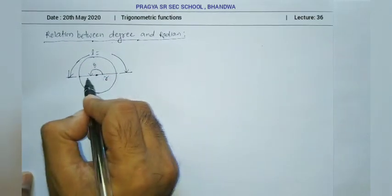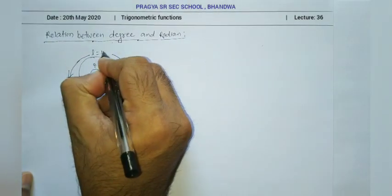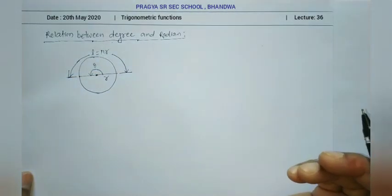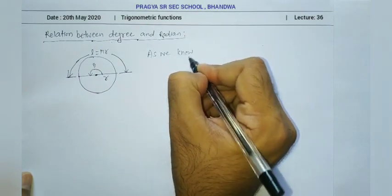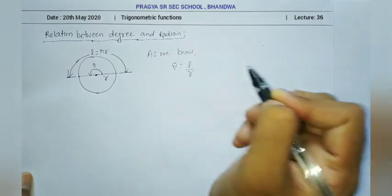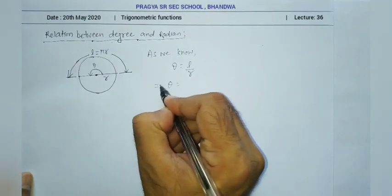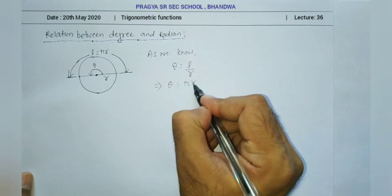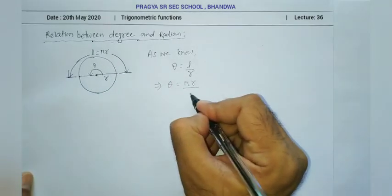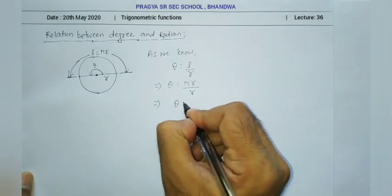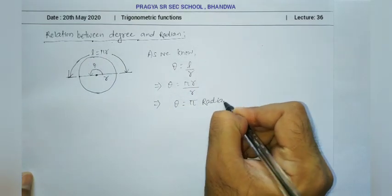If we take a linear angle, the arc length is half the circumference. The circumference is 2πR, so half circumference is πR. As we know theta equals L by R, we put L equals πR and radius equals R. So theta equals πR upon R, which gives theta equals π. In the radian system, theta equals π radian.